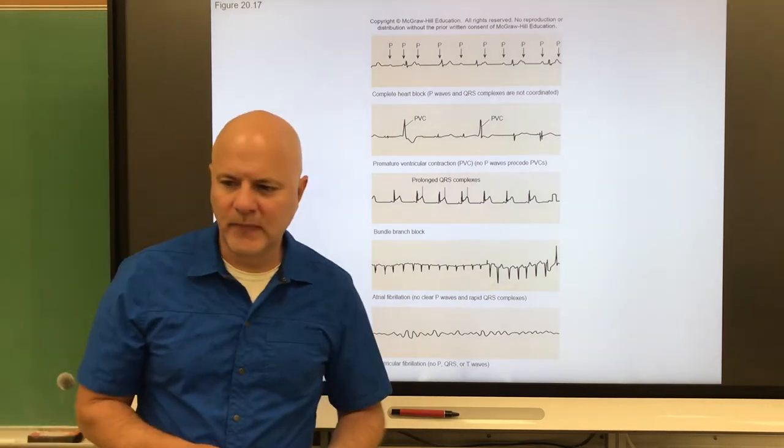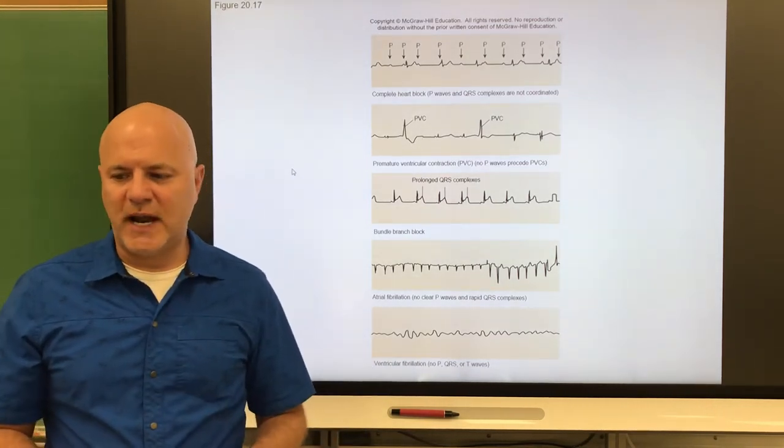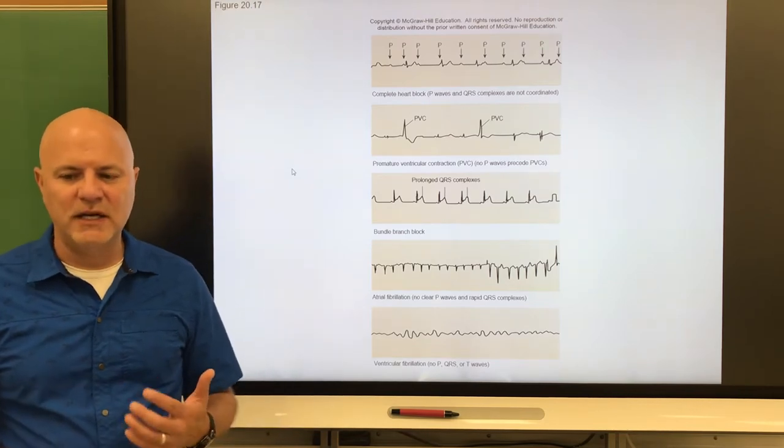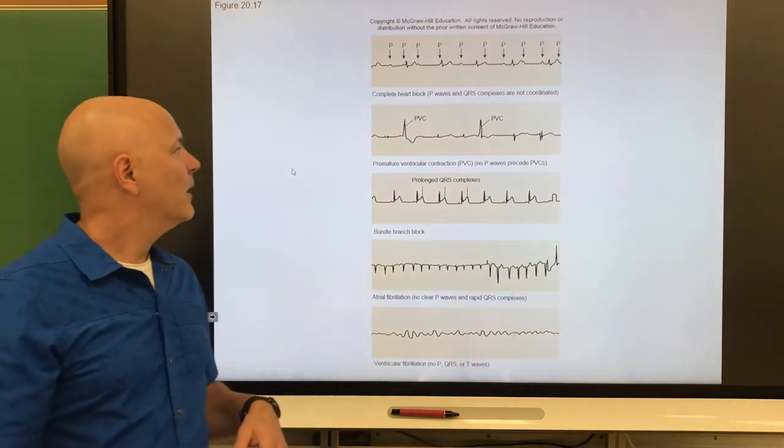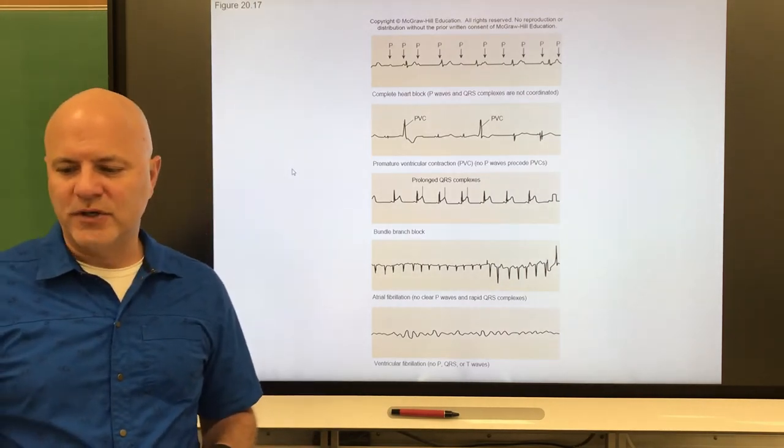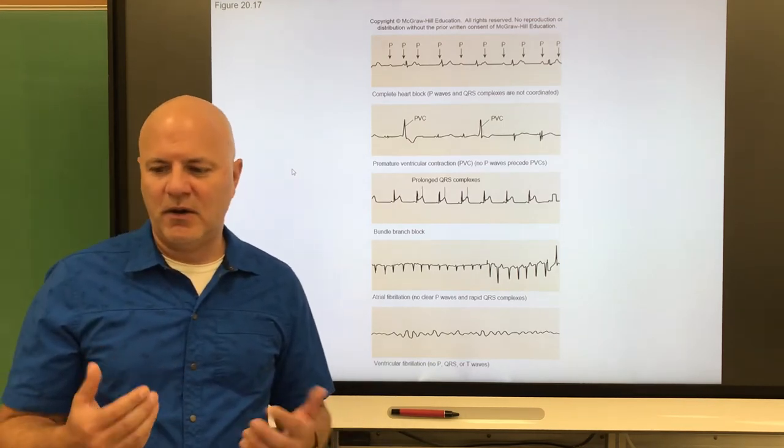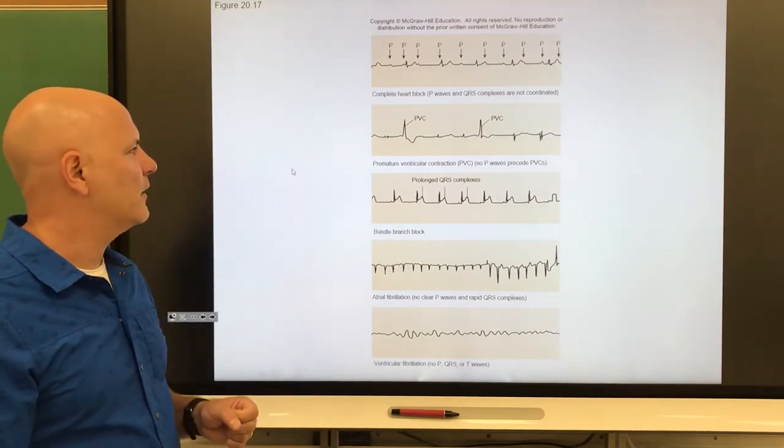Another arrhythmia is extrasystole. This is a premature contraction that occurs before the SA node initiates the next contraction. Here a small region of the heart becomes hyperexcitable, and this could be due to too much caffeine or nicotine.